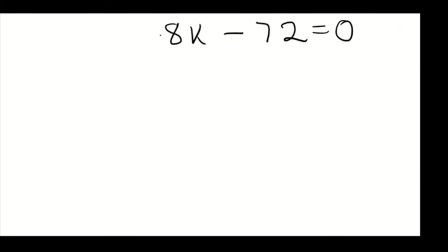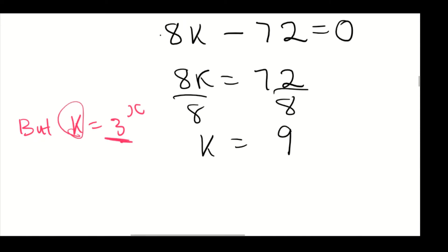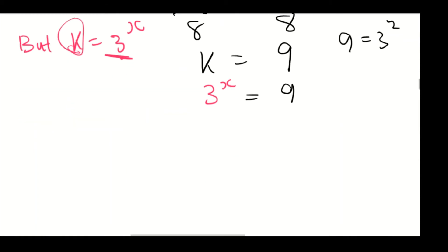Transposing, we have 8k equals 72. Dividing by 8 both sides, we get k equals 9. Remembering that k equals 3^x, we substitute back: 3^x equals 9. Since 9 equals 3 squared, we have 3^x equals 3^2. With the same base, we drop the exponents, so x equals 2. This is our solution of x.